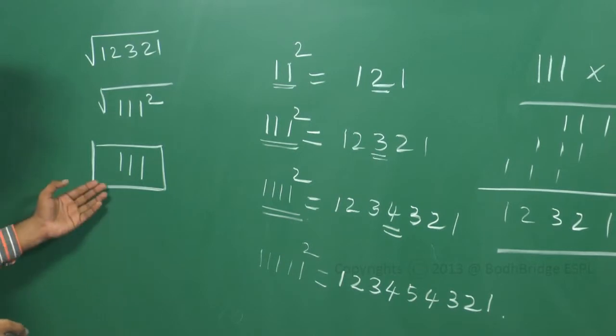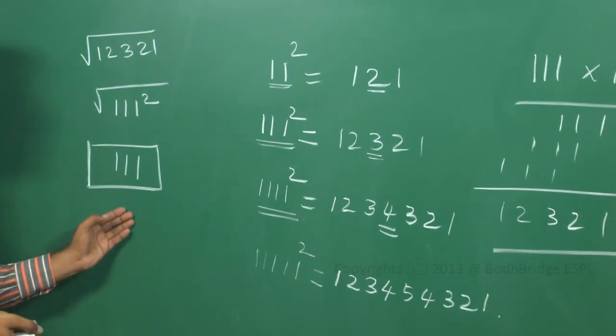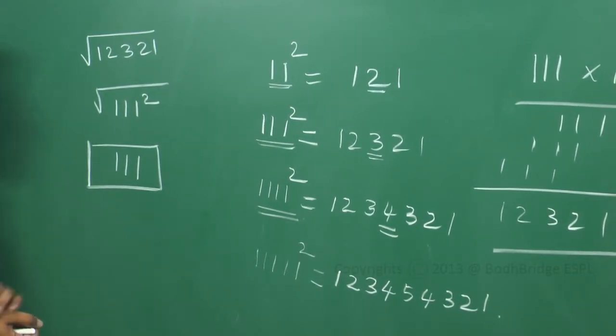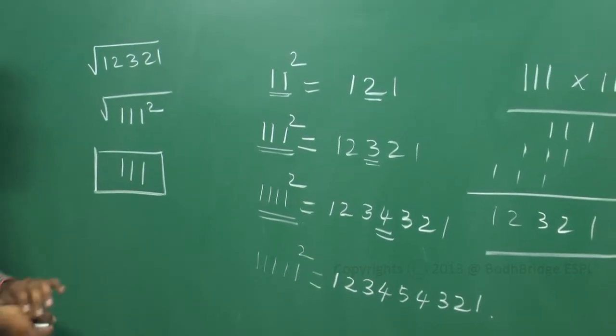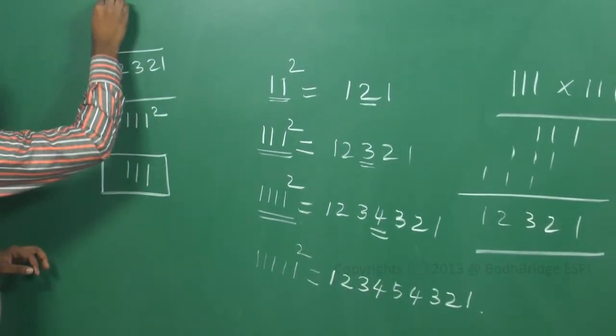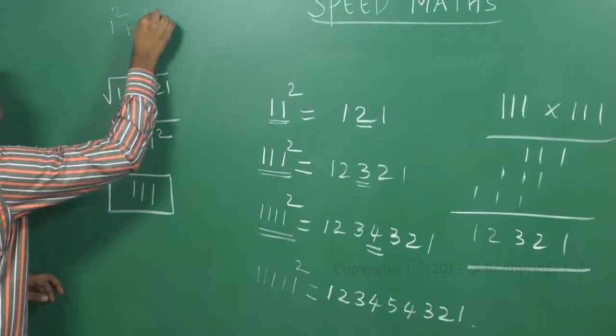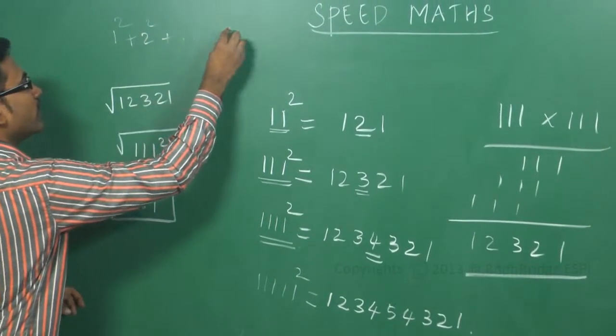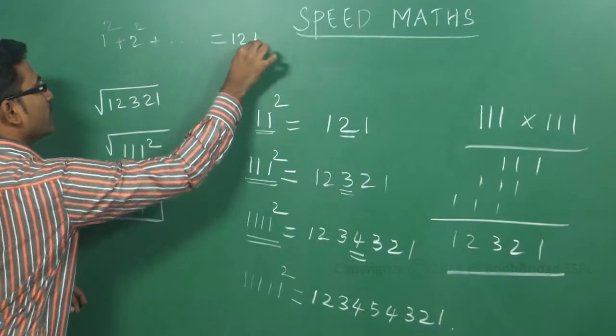So in this kind of problem, it is very easy to solve the answer. And in the same kind, I will tell you one more question also. If they are given a question like 1 square plus 2 square plus up to what square, you will get 121.